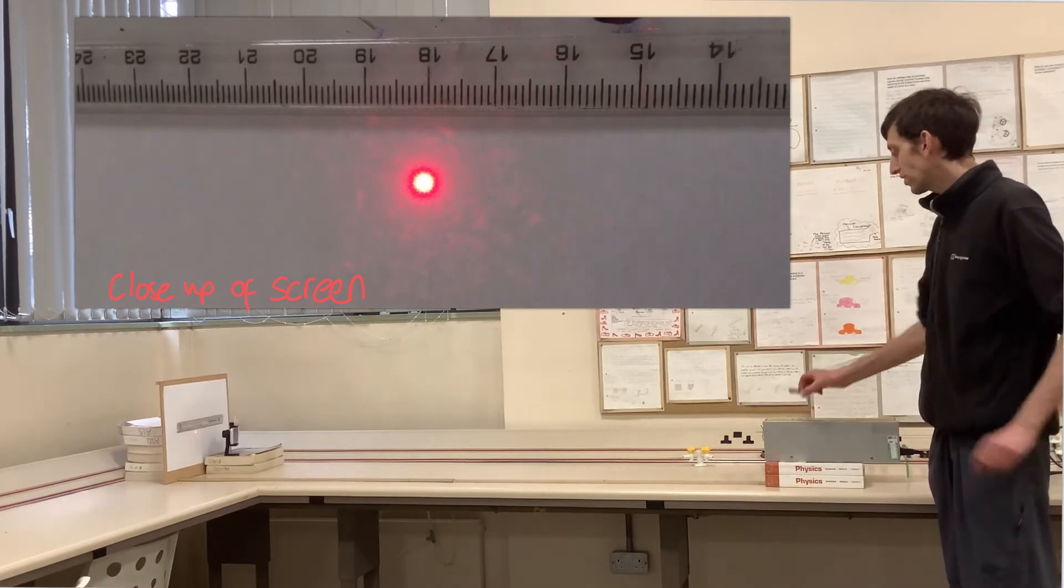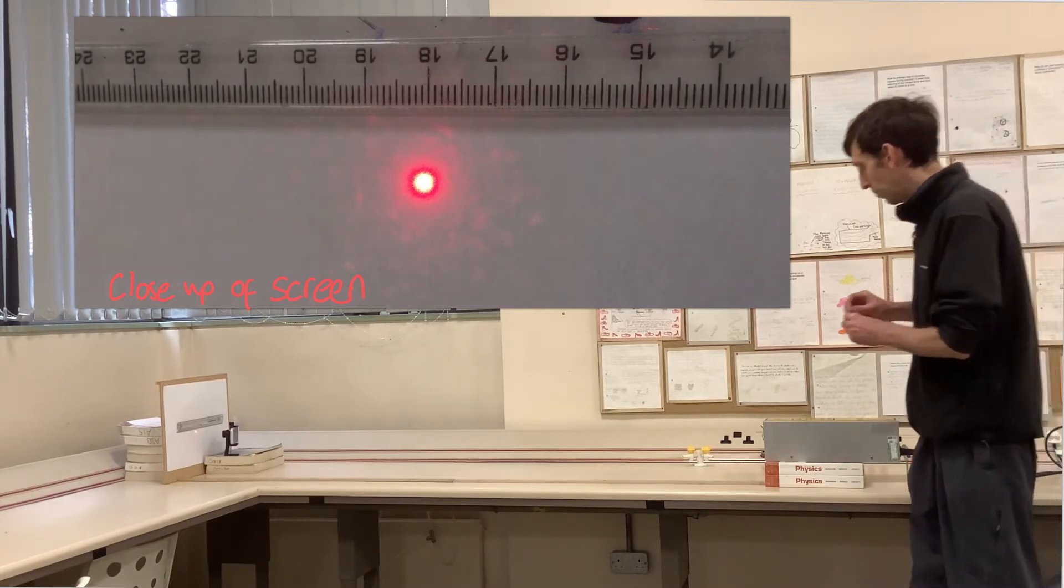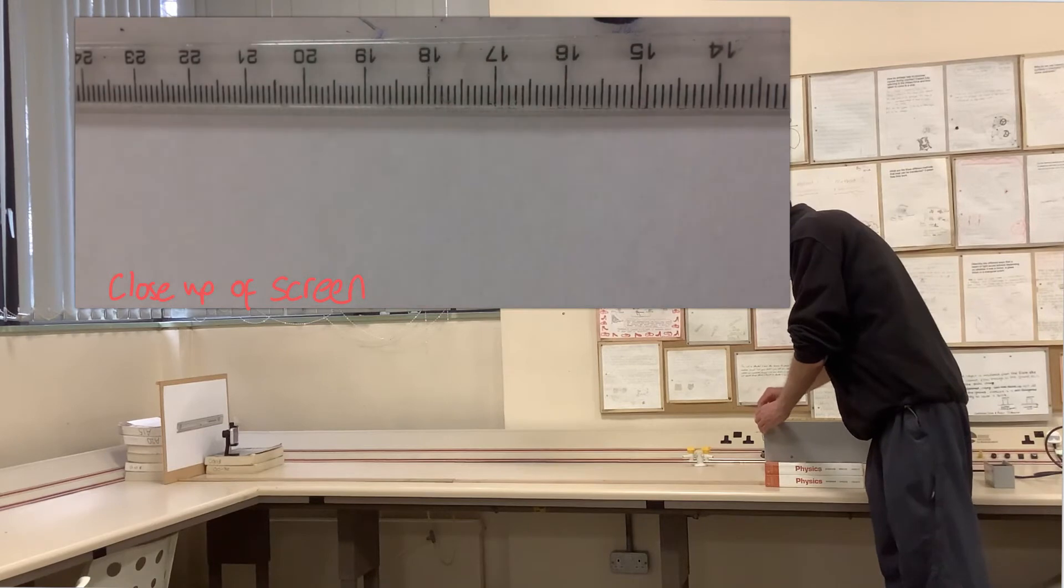Now I'm going to take my double slit, which is a 0.2mm double slit, and I'm going to slide that in front of the laser.